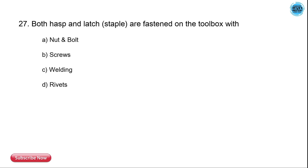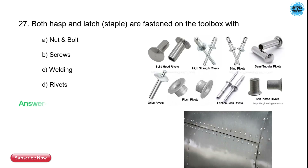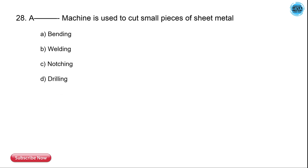Both the hasp and latch are fastened on the toolbox with what? The options are nuts, bolts, screws, welding, and rivets. The correct answer is rivets — both hasp and latch are fastened on the toolbox with rivets.